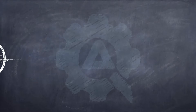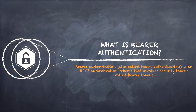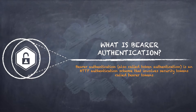The next authentication we will learn about is bearer authentication. Bearer authentication gives access to resources to the bearer of the token. The bearer token is a cryptic string, usually generated by the server in response to a login request. The client must send this token in the Authorization header when making requests to protected resources. The format is a key-value pair where 'Authorization' is the key and 'Bearer' followed by the token is the value. The bearer authentication scheme was originally created as part of OAuth 2.0 but is sometimes also used on its own. Similar to basic authentication, bearer authentication should only be used over HTTPS.